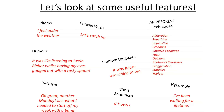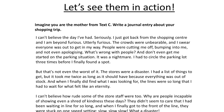Let's quickly whiz through the RIPE FOREST techniques: alliteration, repetition, imperatives, pronouns, emotive language, facts, opinions, rhetorical questions, exaggeration, statistics, and triplets. Hyperbole — for example, 'I've been waiting for a lifetime.' Emotive language — 'it was heart-wrenching to see.' Short sentences — 'it's over.' Humor — 'it was like listening to Justin Bieber while having my eyes gouged out with a rusty spoon.' Sarcasm — 'oh great, another Monday, just what I needed to top off my week with a bang.'